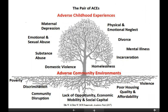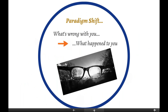This framework, put together by Wendy Ellis, takes an expanded view of ACEs to include both adverse childhood experiences — those 10 things at the top of the tree — and adverse community environments, which are the roots, including poverty, discrimination, poor housing, and community violence. As we step back and think about all this information, it supports a paradigm shift: really changing the way we think from 'what's wrong with you' to 'what's happened to you.'